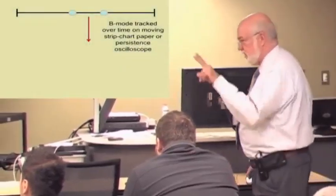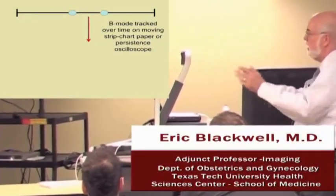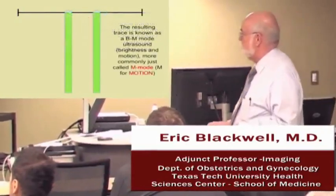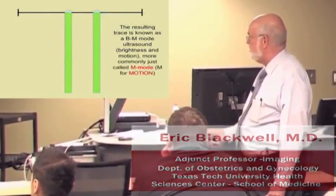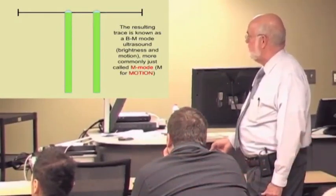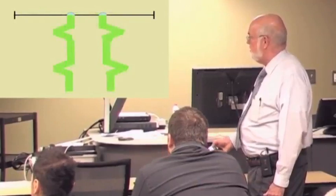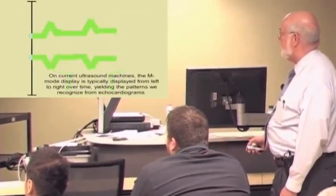Now, suppose we take that B mode image with the little bright dots, and we somehow track it in time, either by tracing it out on moving paper or on a persistence oscilloscope. If the dots are representing stationary structures, you just get a couple of lines. But if they're representing moving structures, then you start to see these patterns. And if you turn that around, pretty quickly you can see we're into what we use for cardiac evaluation.